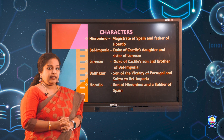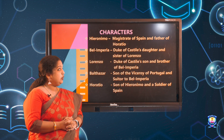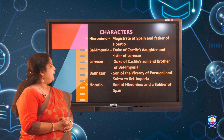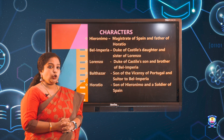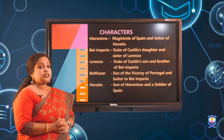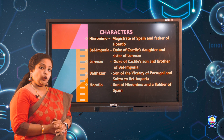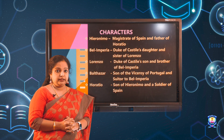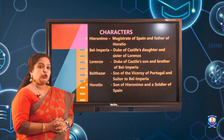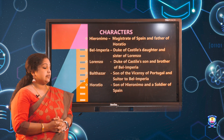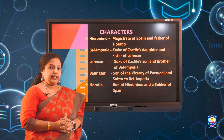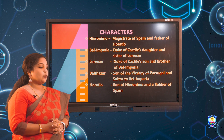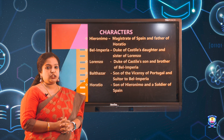The main characters of the play are Hieronymus, the magistrate of Spain and father of Horatio; Belimperia, the daughter of the Duke of Castile and sister to Lorenzo; Lorenzo, the son of the Duke of Castile, a Machiavellian and brother to Belimperia; Balthazar, the son of the Viceroy of Portugal and a suitor to Belimperia; and Horatio, the son of Geronimo and a Spanish warrior.